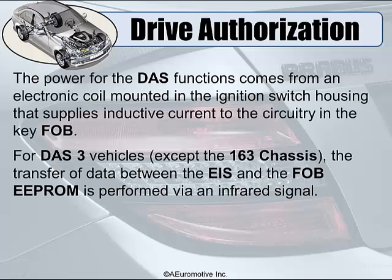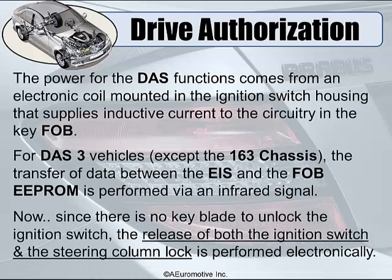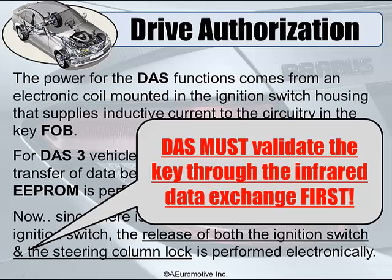The EIS checks the key and then asks the Electronic Steering Lock — or ESL — if it's happy with the key. If the ESL says okay, it then asks the engine ECU if it agrees that this is the authorized key. To put it in simple terms: since there is no key blade to unlock the ignition switch, the release of both the ignition switch and the steering column is performed electronically. DOS must validate the key through the infrared data exchange first.